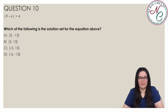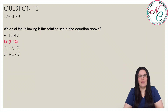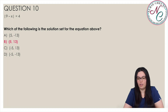The absolute value of 9 minus x is equal to 4. Which of the following is the solution set? Is it A, 5 and negative 13; B, 5 and 13; C, negative 5 and 13; or D, negative 5 and negative 13? The correct answer is B, 5 and 13. The quantity 9 minus x lies exactly 4 units away from 0 on the number line, so 9 minus x equals 4 or 9 minus x equals negative 4.